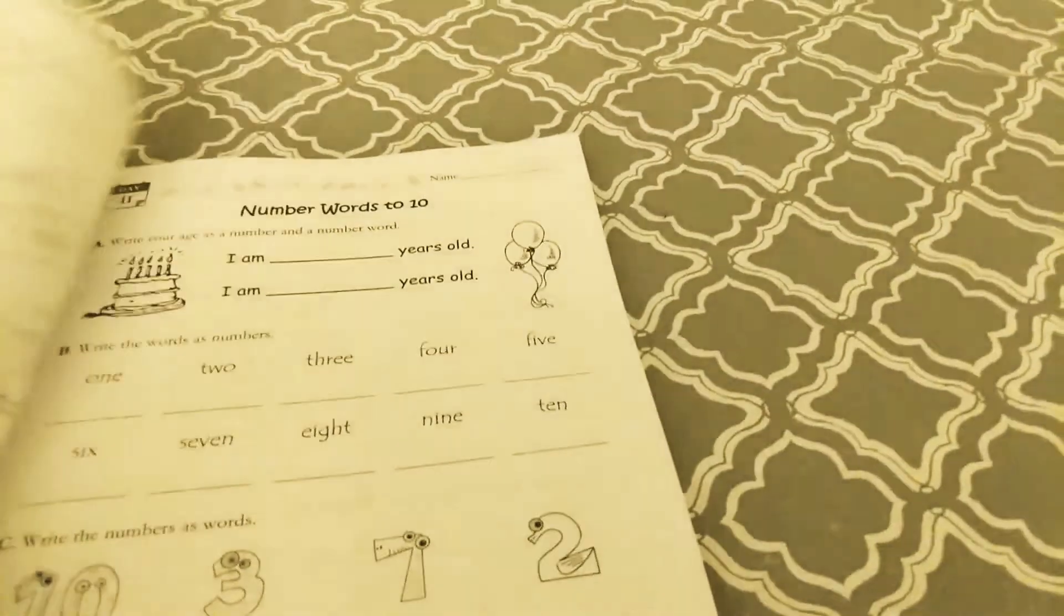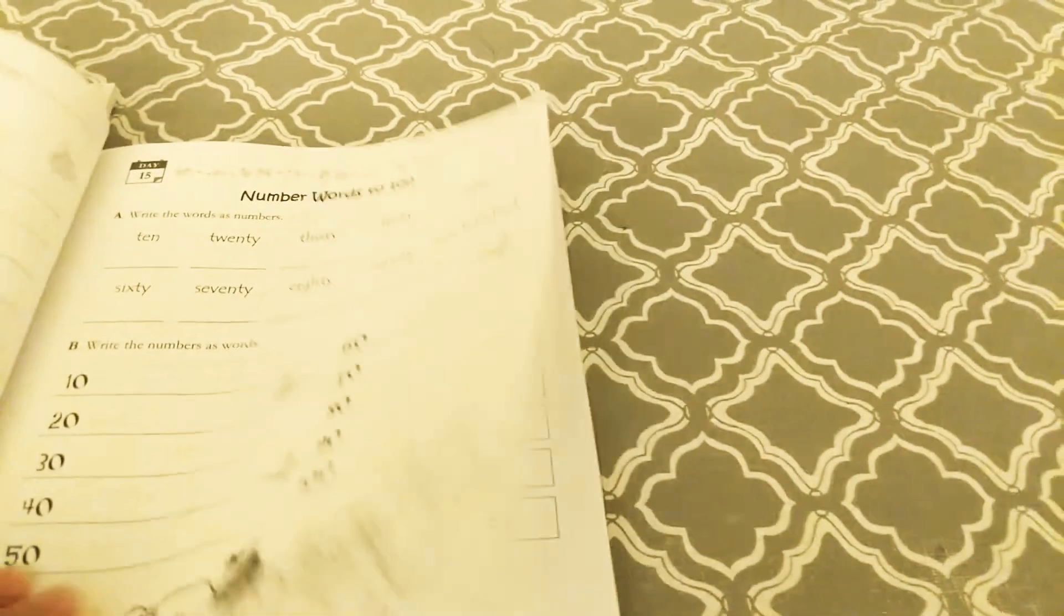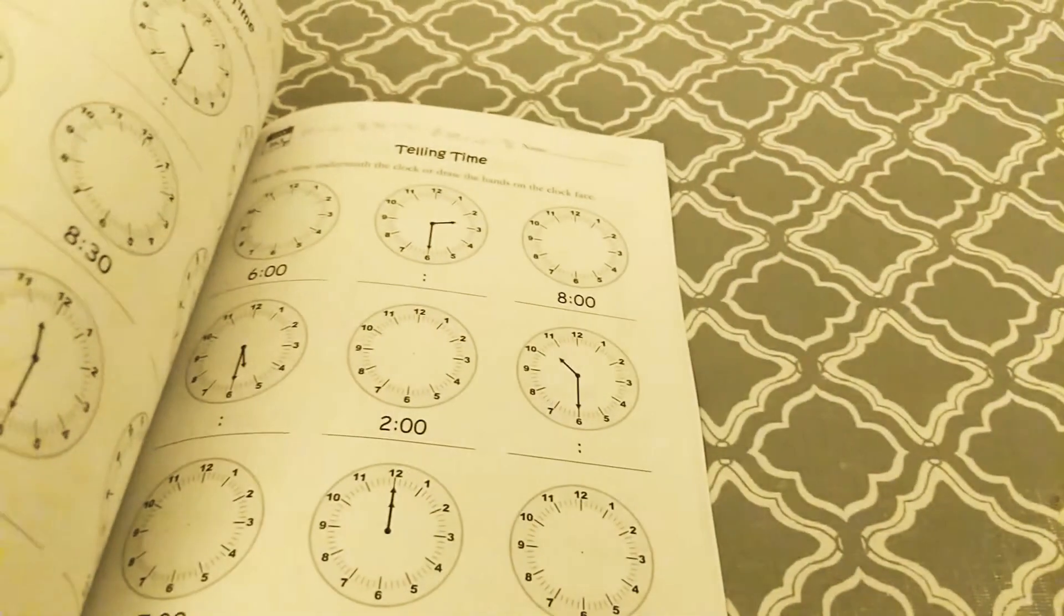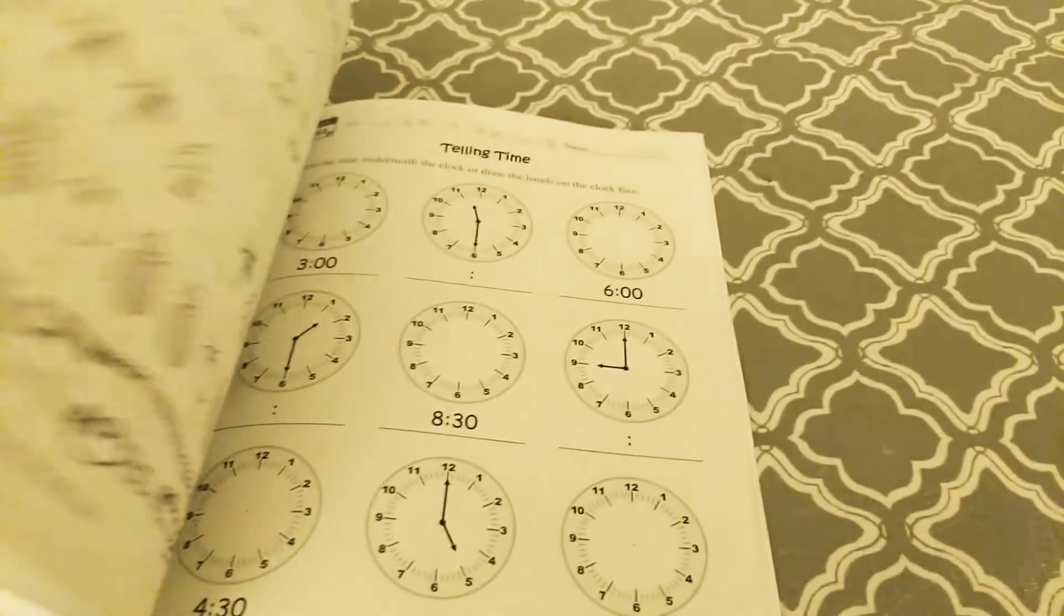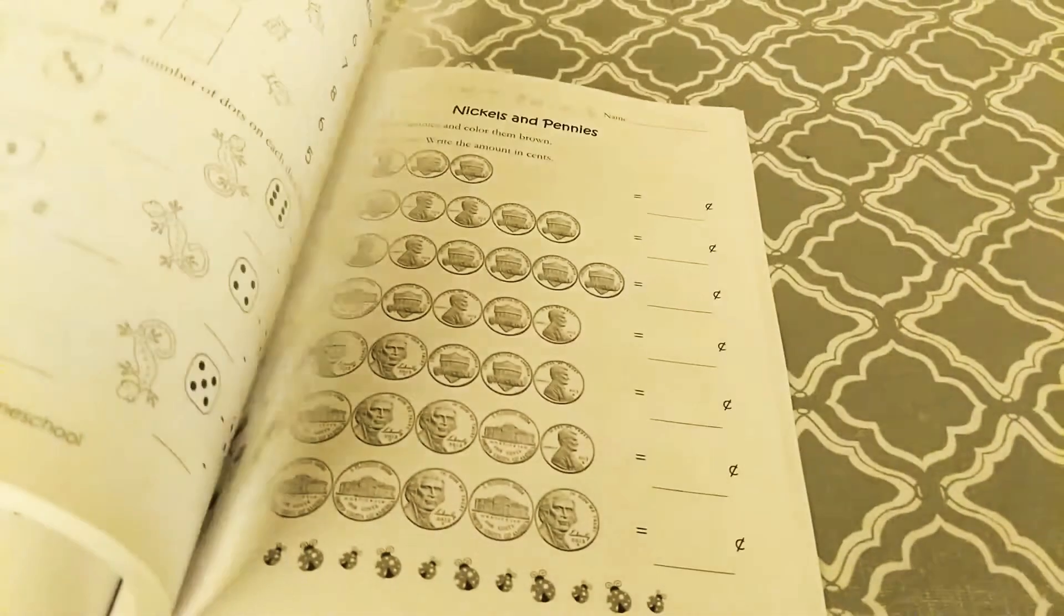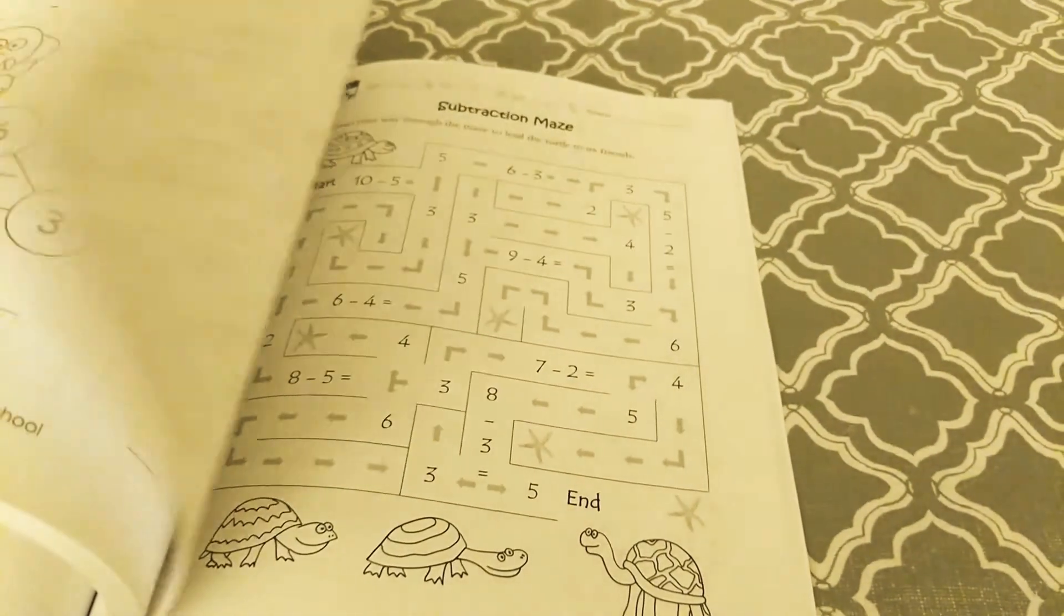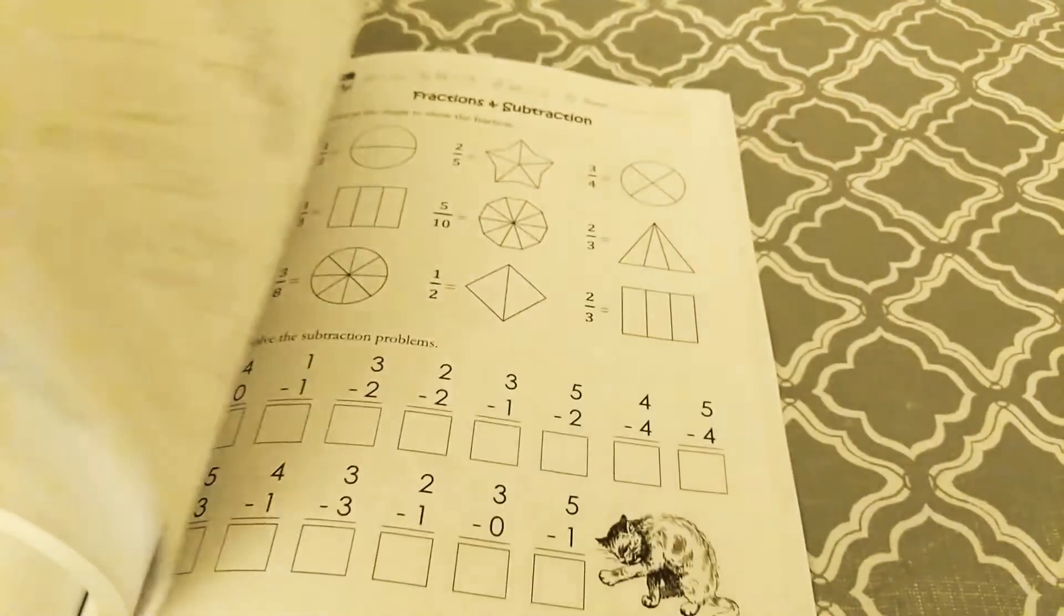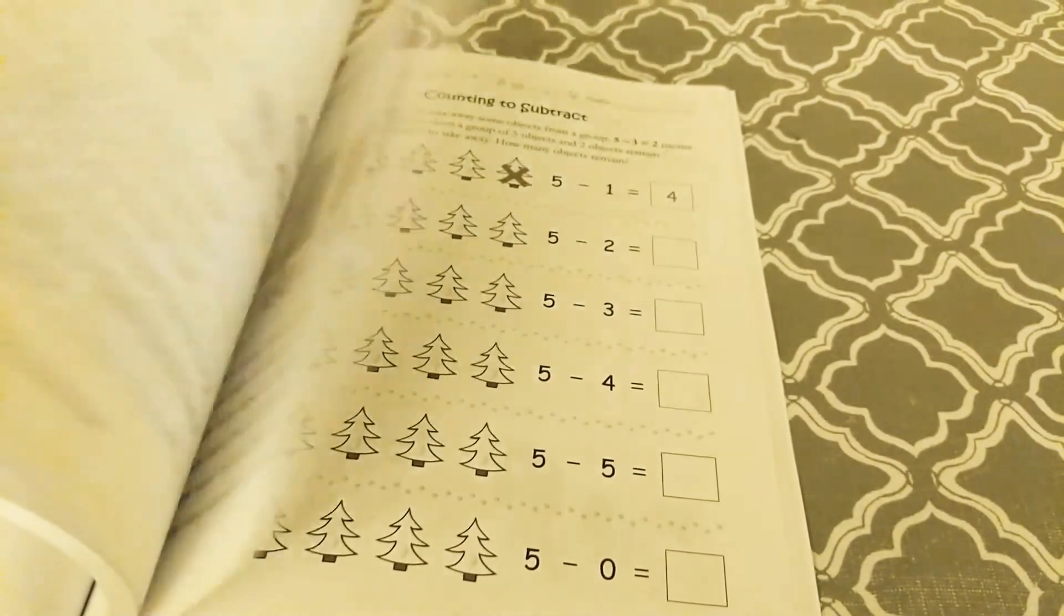Okay, patterns or no numbers. Number words. Let's see. Time, just all the way in the back. I'm gonna flip through quickly: money, adding and subtracting. This looks pretty thorough.